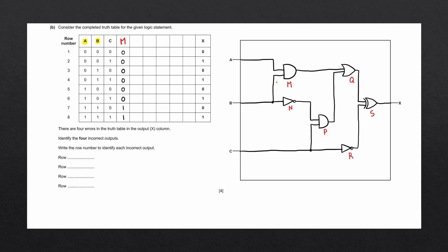The next logic gate we'll look at is N — this is our NOT gate. The input for the NOT gate, following from the left, is going to be B. Let's go ahead and write N in the next column. The rule for the NOT gate is that it inverts the input: whenever we have a 0, we write a 1, and whenever we have a 1, we write a 0. Starting with row 1, we have a 0, so we write a 1. Row 2 is the same. Row 3 has a 1, so we write a 0. Row 4 is the same.